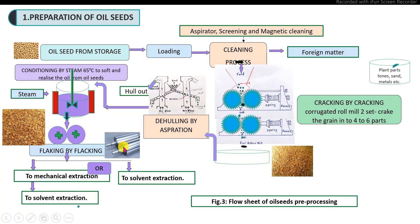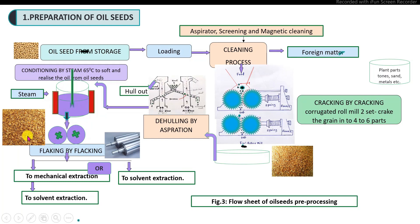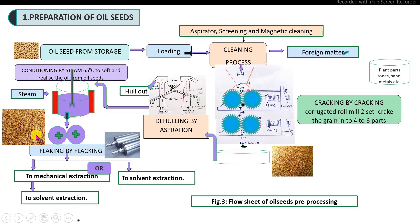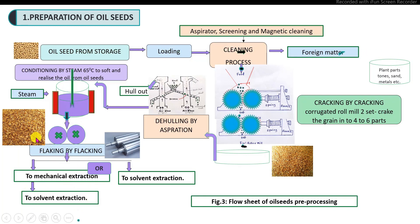In the flaking process, smooth rollers use shearing force to convert the coarse grains into flakes. The resulting oil seed flakes can be used directly for solvent extraction, or depending on the oil content: if the oil content is more than 20 percent, mechanical pressing is done first followed by solvent extraction; if below 20 percent, the solvent extraction method is used directly.